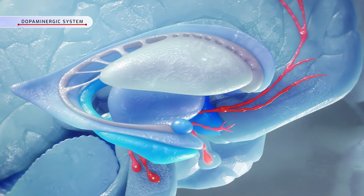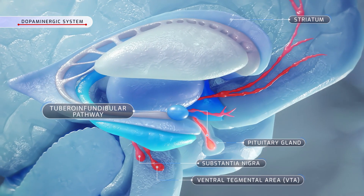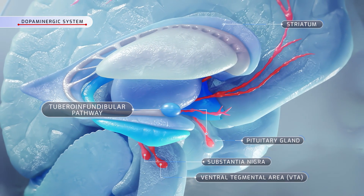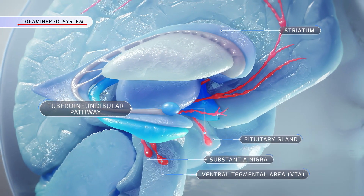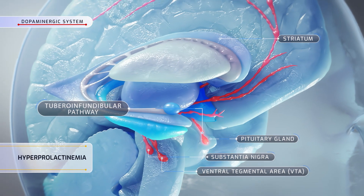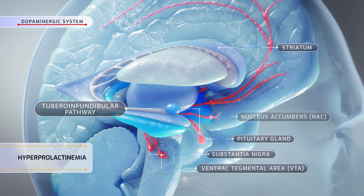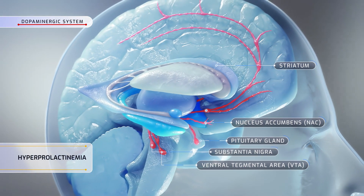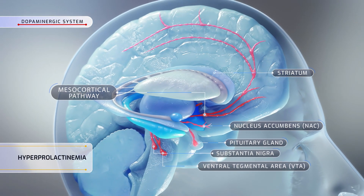Furthermore, dopamine inhibition in the dopaminergic tuberoinfundibular pathway increases prolactin secretion from the pituitary gland, causing hyperprolactinemia.